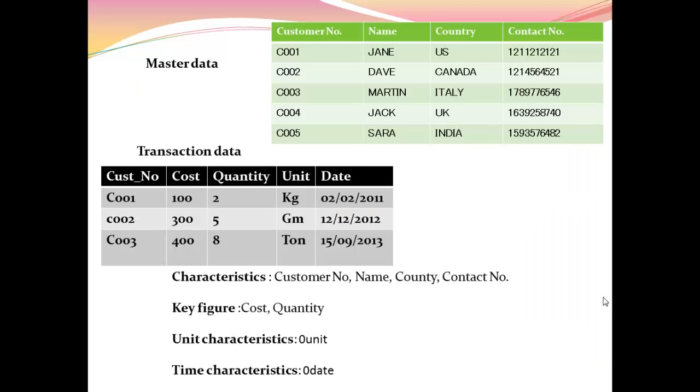I have taken an example where we will be analyzing what is the type of data, how many info objects we will be creating and what will be its type. The first one is master data with 4 info objects of which name, country and contact number are attribute type of characteristic info object. In our transaction data we have 5 info objects of which one is characteristic type, cost and quantity are key figure type, unit is a unit type, and date is a time characteristic info object.